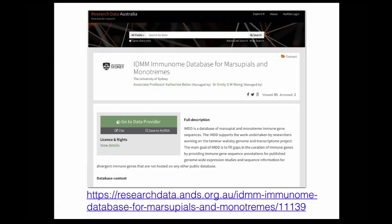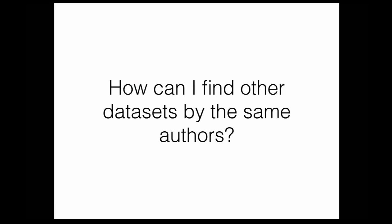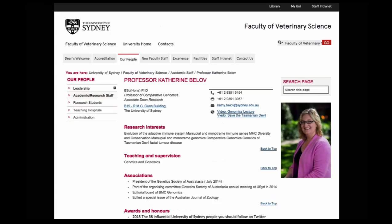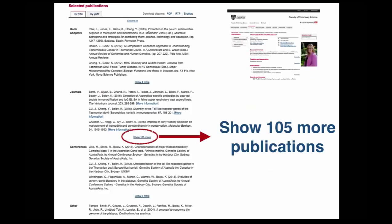If I search these authors on the web — and this is actually the problem statement — can I find other datasets by the same author? If I search them, I will find a page from Professor Catherine Blod from the University of Sydney. When you look at this page in detail, you can see different information about the author, including grants and publications. If I scroll down, you can see the list of journal publications, conference papers, grants, and book chapters. There are 105 more publications in this list.